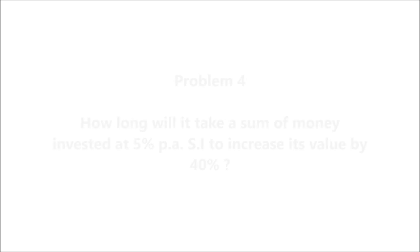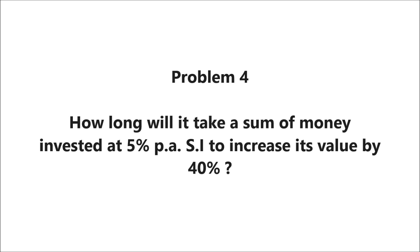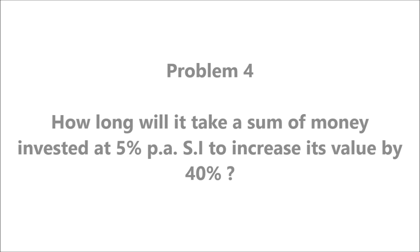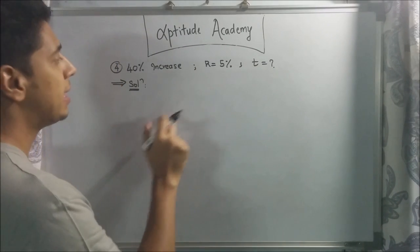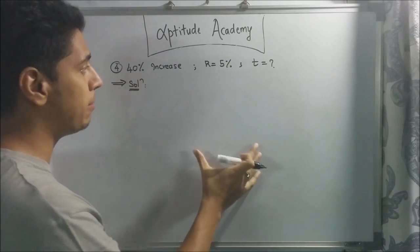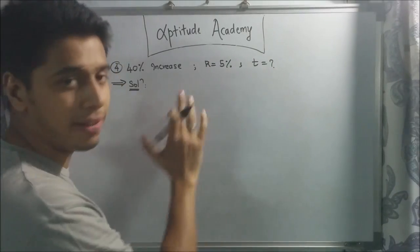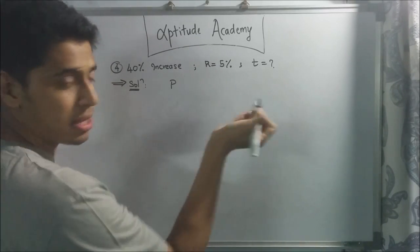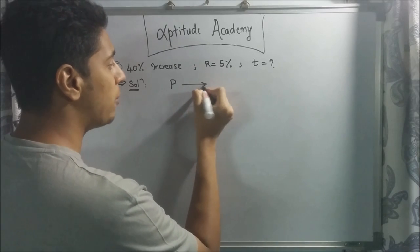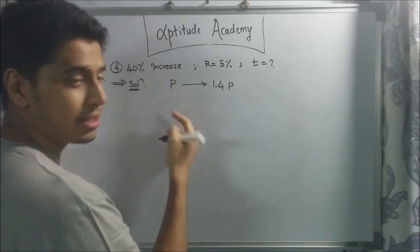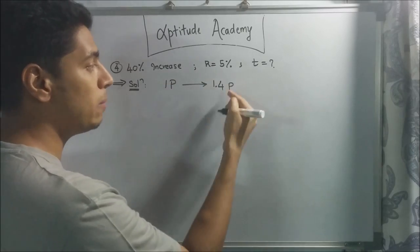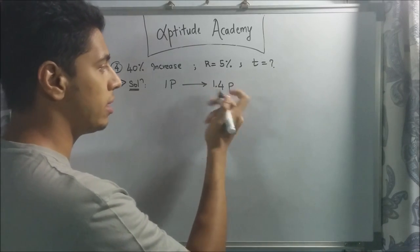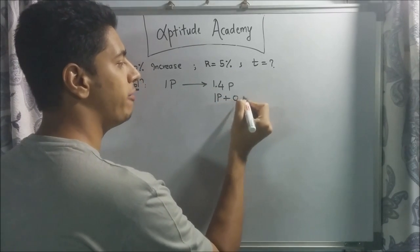Let's go to Problem 4. How long will it take a sum of money invested at 5% per annum simple interest to increase its value by 40%? A 40% increase means if I invested P, at the end I would get 1.4P. That 0.4P increase represents 40%. So the amount can be broken down as 1P plus 0.4P — the simple interest earned is 0.4P.